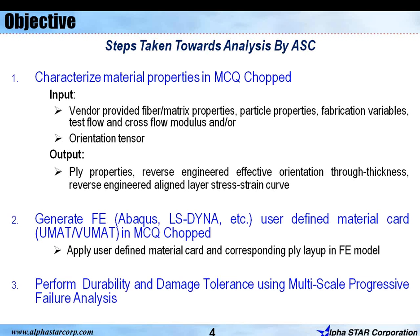The objective here is to show the steps taken towards analysis by AlphaStar Corporation. Number one: we characterize material properties using MCQ Chopped — these are the typical inputs and outputs. Number two: we generate an FE user-defined material card in MCQ Chopped, which can be applied into the corresponding ply layups for FE models. And at the end, we perform durability and damage tolerance using multi-scale progressive failure analysis.